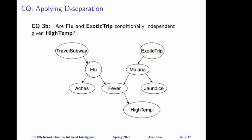Here's the final question. We are considering flu and exotic trip again, but in this case we observe high temperature. Given that, are flu and exotic trip conditionally independent or not? Think about this yourself, and then keep watching for the answer. The correct answer is no — flu and exotic trip are not conditionally independent given high temperature.